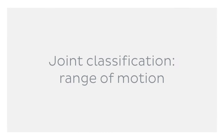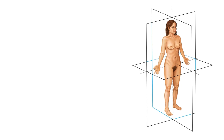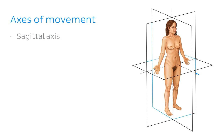The final way in which joints can be classified is according to their range of motion. When classifying a joint based on its range of motion, it's important to first understand the various axes of movement. In joint movement, there are three main axes: the sagittal axis, which passes horizontally from anterior to posterior; the frontal axis, which passes horizontally from left to right; and the vertical axis, which passes vertically from superior to inferior.